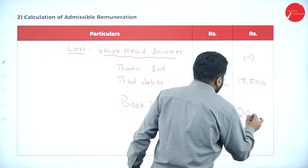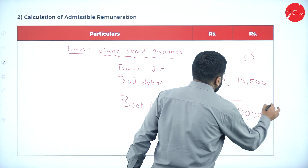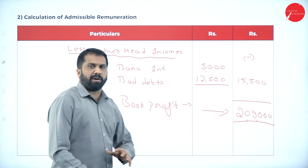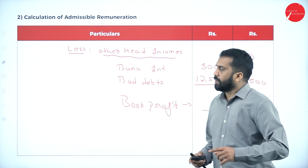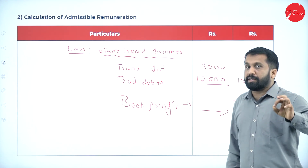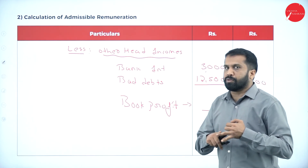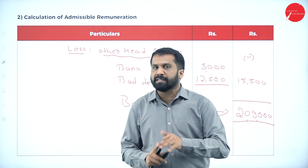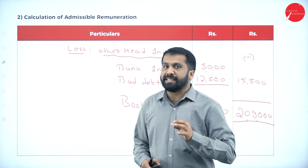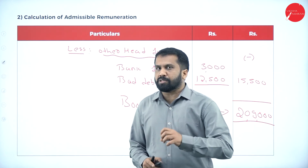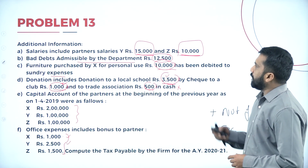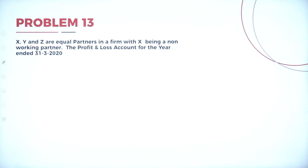2,09,000 is your answer — this is what we call your book profit. It is not complicated actually, even though there are many adjustments. Remember, work out this problem 2 to 3 times. You will understand what to do with bad debts, depreciation, personal expenses, and Section 184. You can learn so many concepts from this particular topic. Please take a screenshot of the problem and the answer.